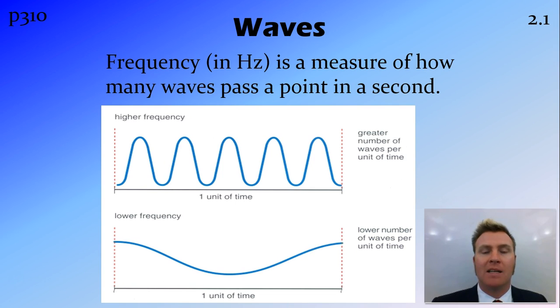So if this was how many waves passed in one unit of time, on this side, in the high frequency, we'd have one, two, three, four, five wavelengths. And in this one we'd have one wavelength. So this would be five hertz, this would be one hertz.